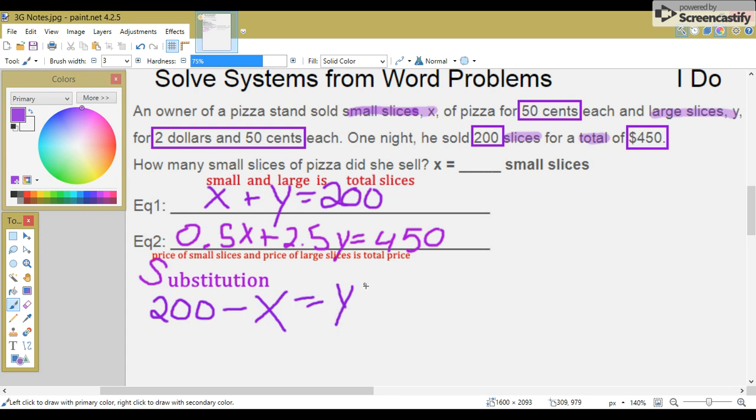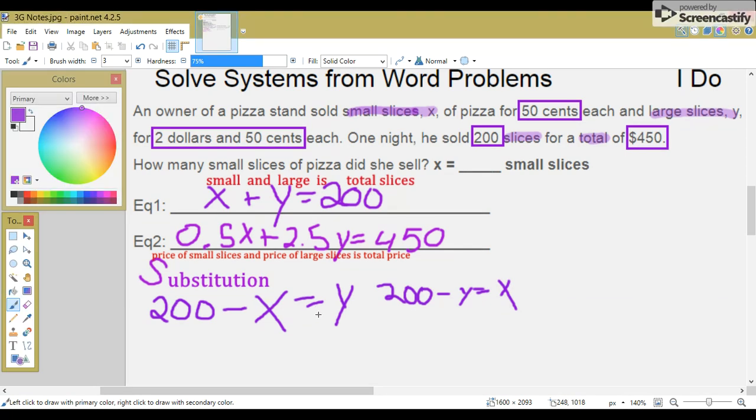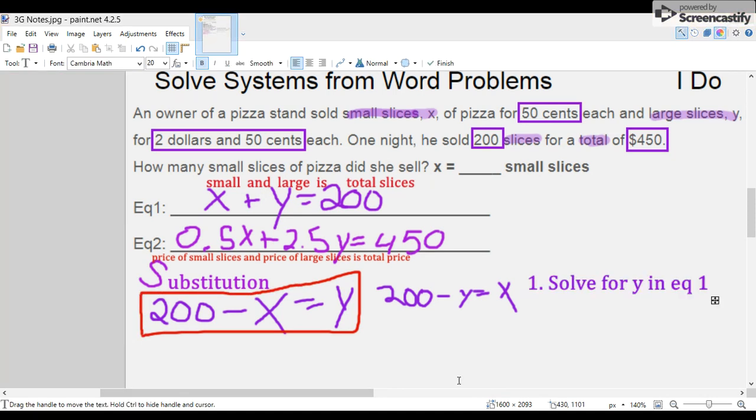200 minus X also equals Y. I'll write both of these out. The one you want to use is the one that equals Y, because we're going to replace all the Y's in terms of X, because we're looking for X. So, we're going to use this substitution. That's your first step.